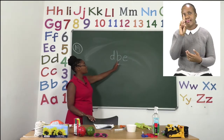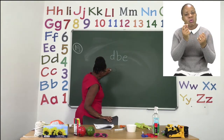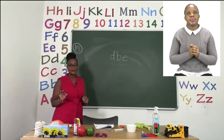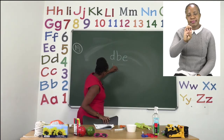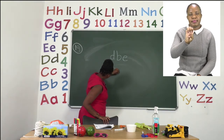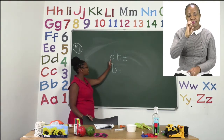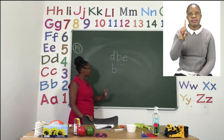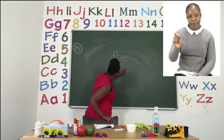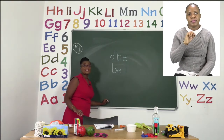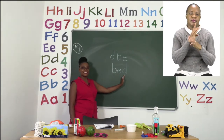The first letter is B. So we write B. Then we have our sound, the one we are focusing on — E. So we write E. And the last letter is D. So we write D — nice and round, up and down. Now we have made the word bed. To check, you can even sound it: B, E, D — bed.